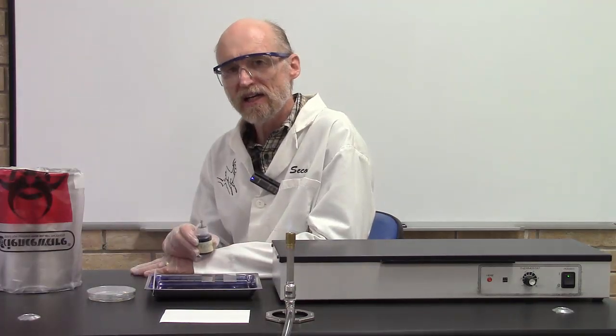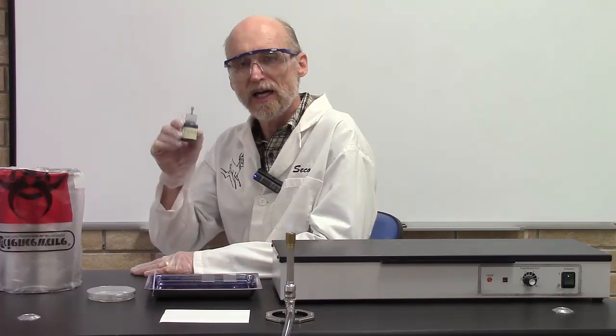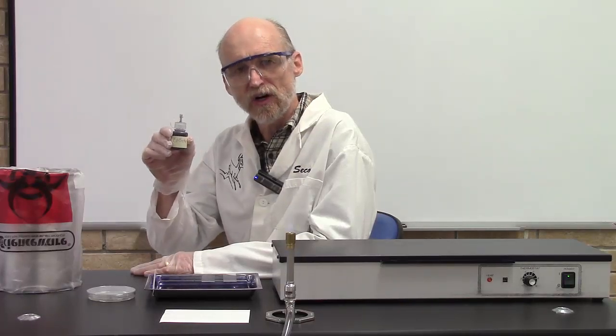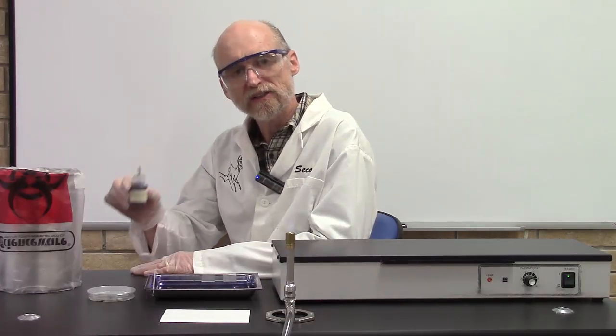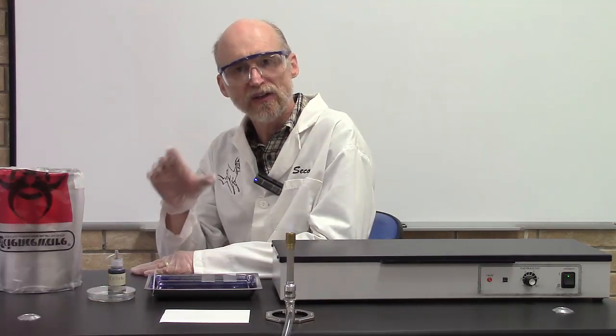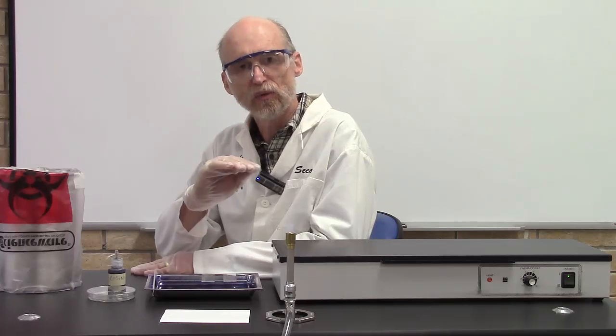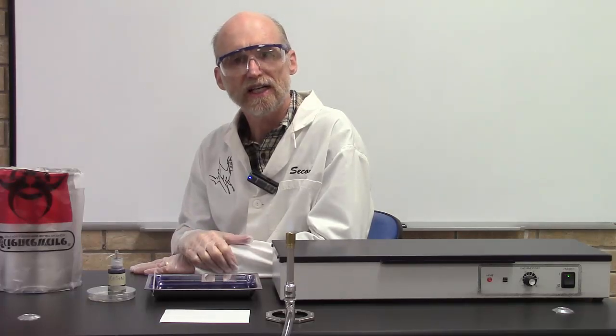The reason we call it the negative stain technique is because we're applying a stain that carries a negative charge. You'll recall the bacterial cells have a negative charge too. So the cells actually repel the stain. We're really staining the background. What you get is a white cell against a dark background. You get really nice contrast. Let's look at the materials you're going to need to do this technique.